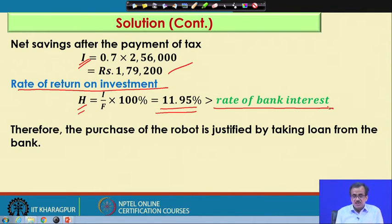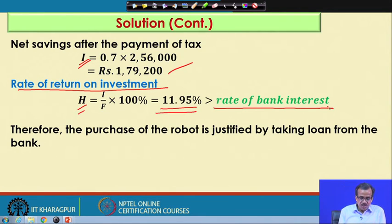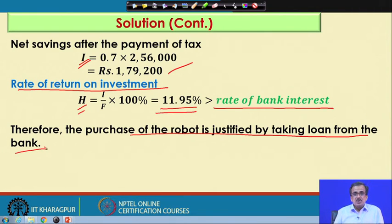So, we should purchase this particular robot by taking loan from the bank. This is the decision that we can purchase the robot by taking loan from the bank through this economic analysis. This is the way it helps to take the decision whether we should take loan from the bank to purchase a particular robot.